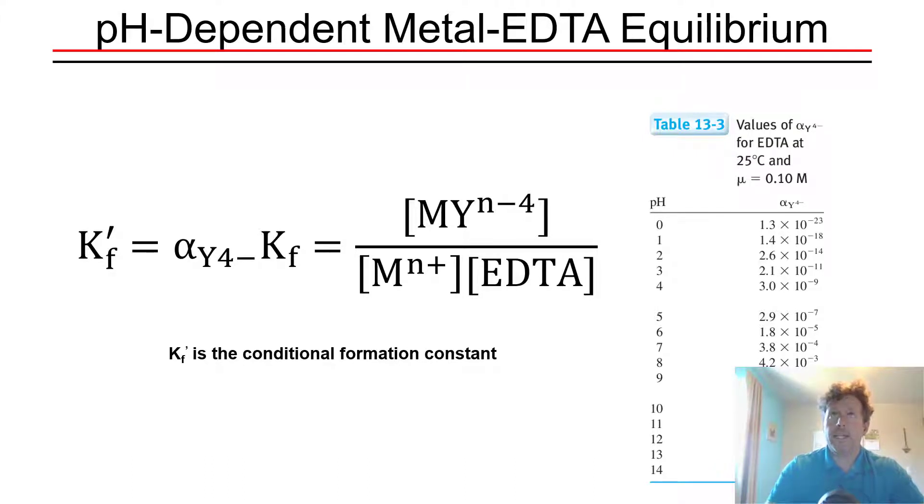In a compleximetric titration, like any other titration, the concentration of the analyte is determined by finding the endpoint volume and then taking the endpoint volume times the concentration of the EDTA titrant. Remembering that EDTA binds all metal cations in a one-to-one ratio will give you the concentration of the metal cation that is your analyte.